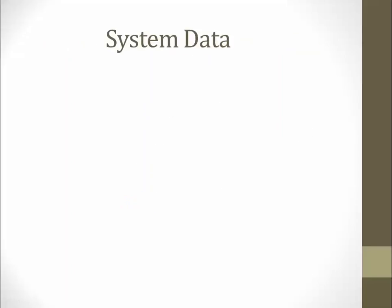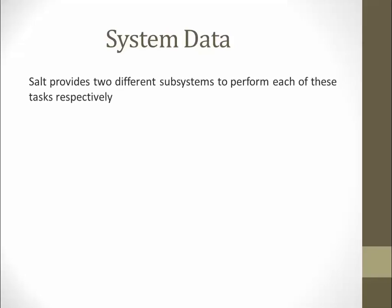Data communicated between salt master and minions is differentiated into two variants: grains and pillar. Salt grains contain static data about the minion — operating system, hardware, memory, and other system-related information. Pillar, on the other hand, is user-defined, dynamic information that gets deployed into the minions.